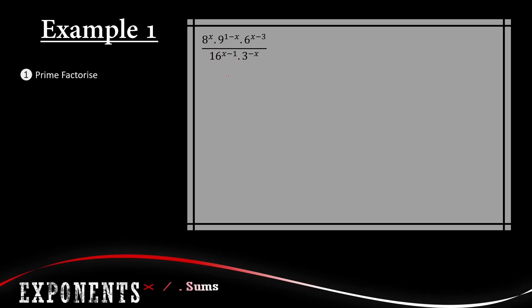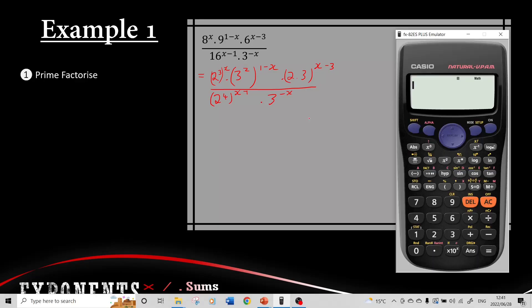The first step is to prime factorize — we take all the bases and prime factorize them. So this is going to be 2 to the power of 3, then times 3 squared to the power of 1 minus x, then times 2 times 3 to the power of x minus 3. When I prime factorize and the base has exponents, I put them into brackets. If you struggle with prime factorization, you can use your calculator: type in the number, press equal, then shift and FACT, and you get it in prime factored form.